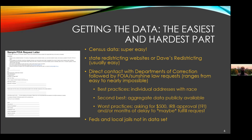Similarly, the Bureau of Prisons — the Federal Bureau of Prisons — which represents somewhere between 10 and 15% of all incarcerated people in the United States, simply does not give that data out. It's just not something we've ever been able to get, and other people have not been able to get either. And so they are also not in our estimates of returning citizens.